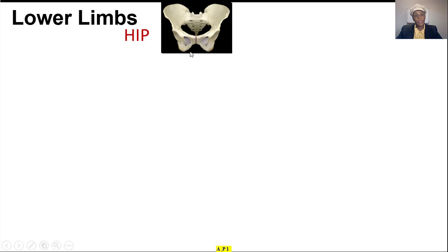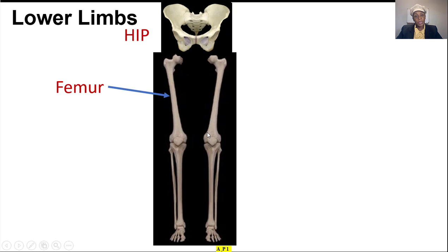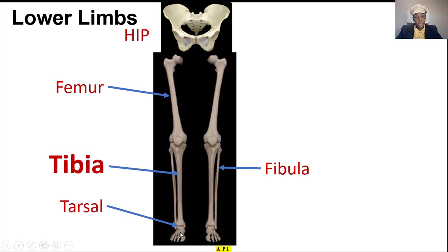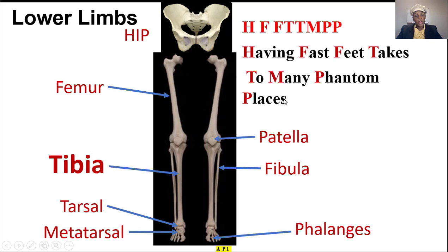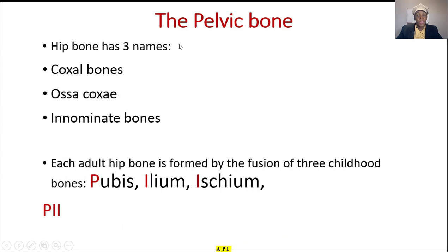Now let's talk about the lower limb. We have the hip and the lower limb made of the femur — the big one, the thigh — the fibula, the tarsal bones, the tibia, the metatarsal, the phalanges, and the patella. The mnemonic: 'having fast feet takes too many phantom places' — hip, femur, fibula, tibia, tarsal, metatarsal, phalanges, patella.